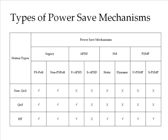The three types of stations available in the market are non-QoS stations, QoS stations, and HT stations. From the matrix it is clear that each type of station can support a few of the available power save methods. A tick mark indicates that a station can support those mechanisms, but it is up to the vendor to decide which power save mechanism is to be implemented in their device.